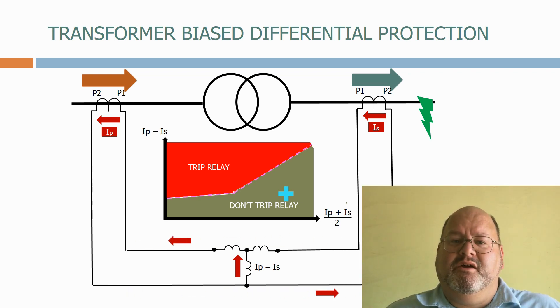Transformers feed power into the network from the generating stations, and therefore also feed the network with the high currents that occur when a fault happens on the network.